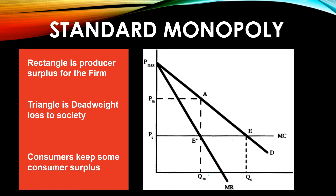This is the pure monopoly situation and its basic setup. You find where marginal revenue equals marginal cost — that's your quantity. You take that quantity and see where it hits your demand curve — that tells you your price. Then you can analyze the surplus and deadweight loss from there.